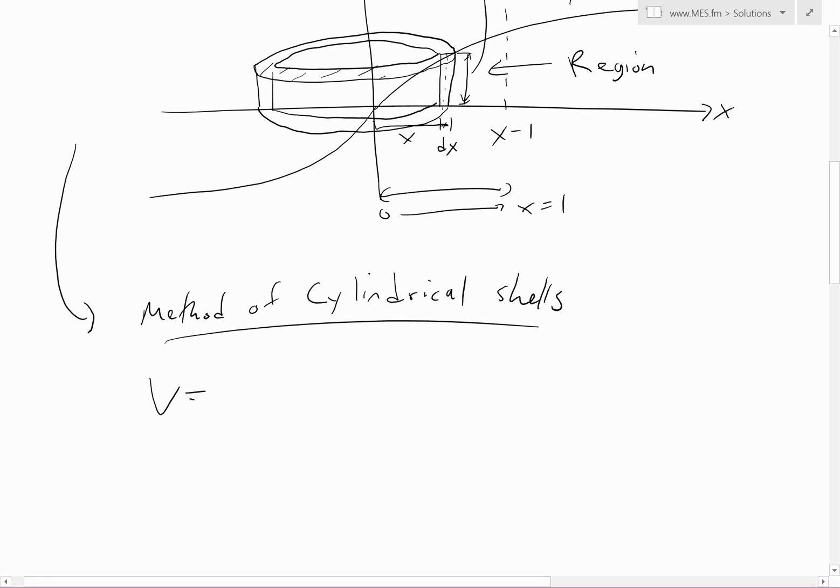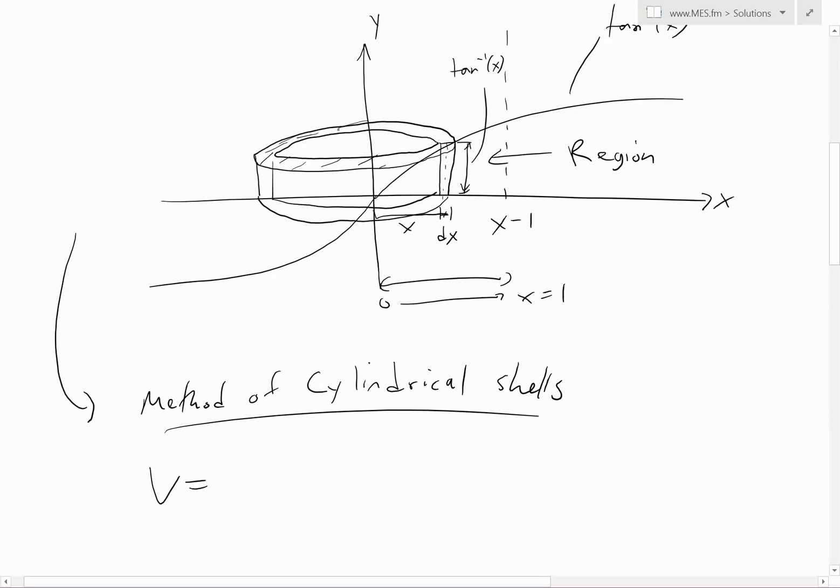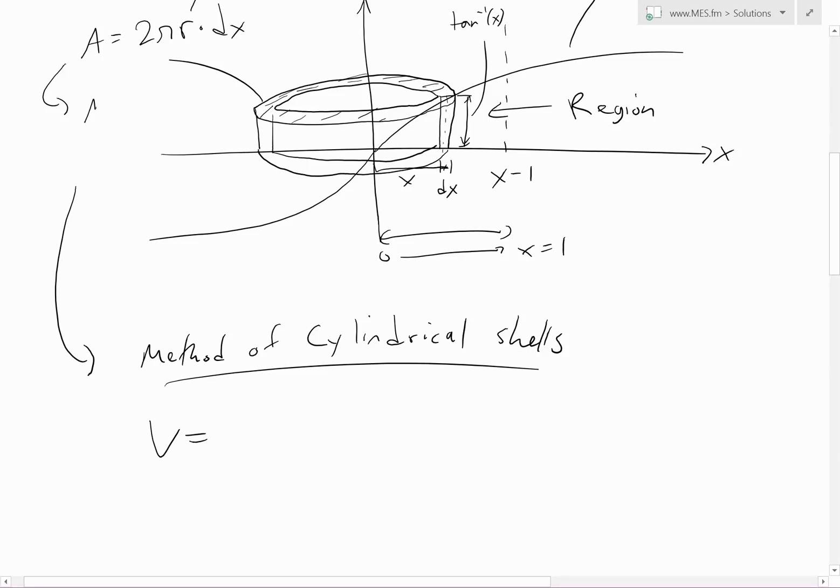The volume using the method of cylindrical shells: this top area is the circumference of the circle, so circumference is just 2π times r times the distance dx. In this case our radius is just equal to x.